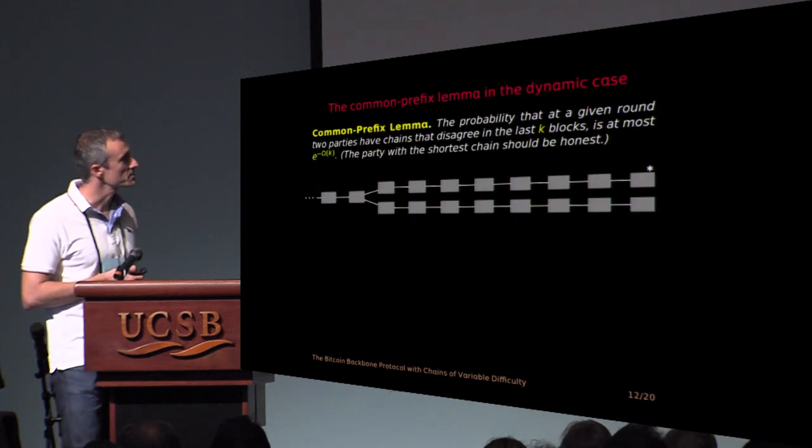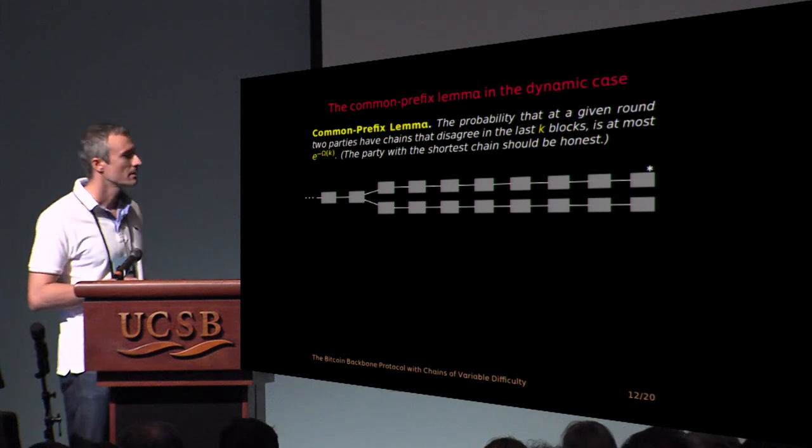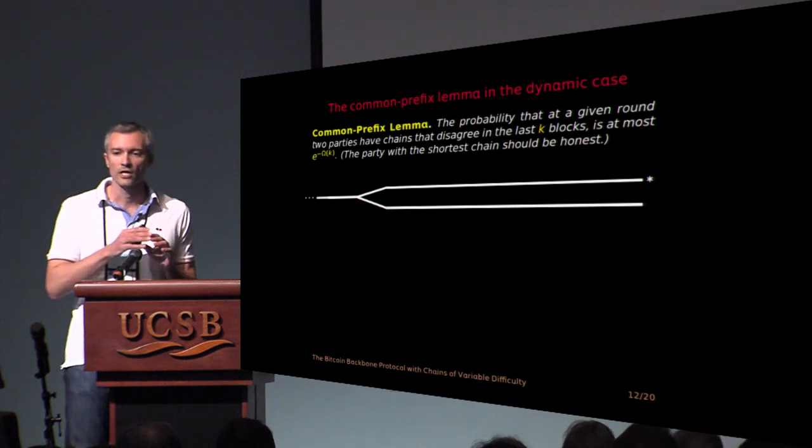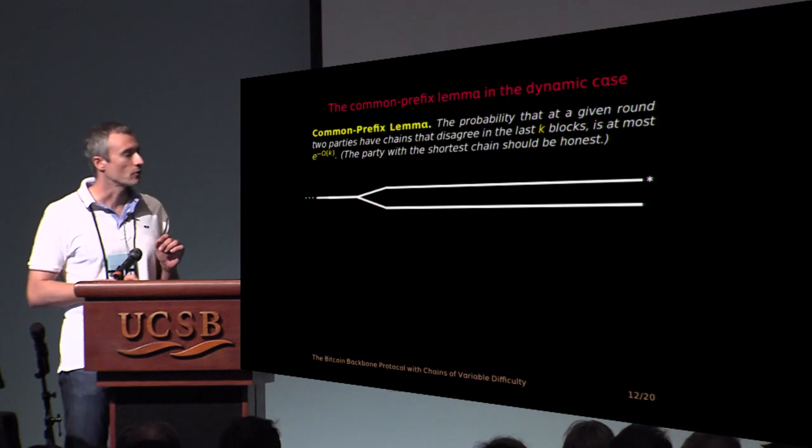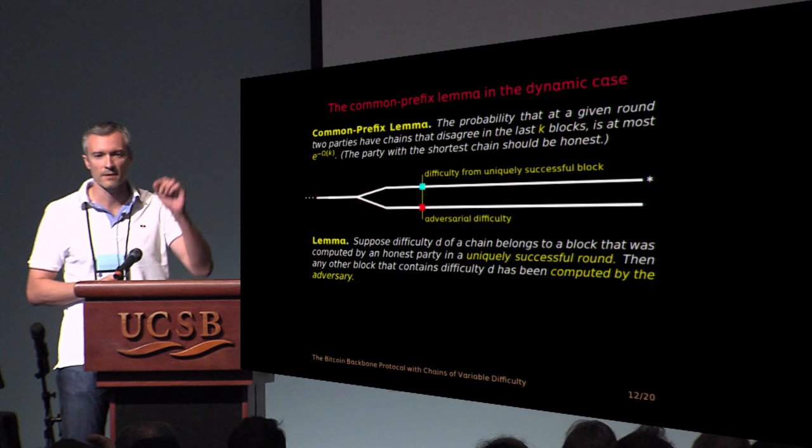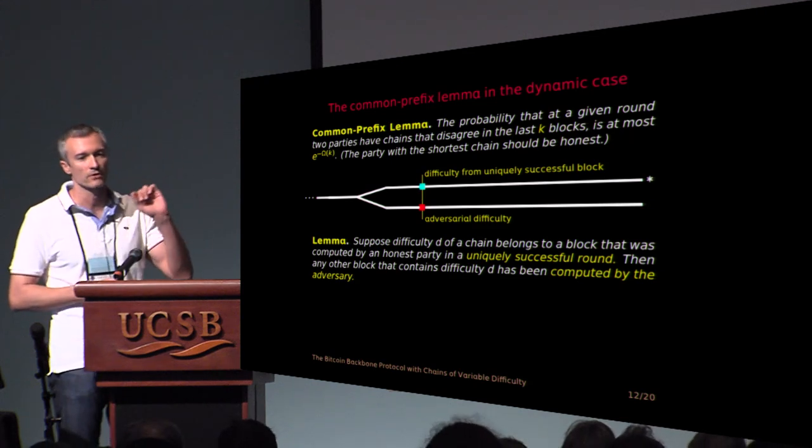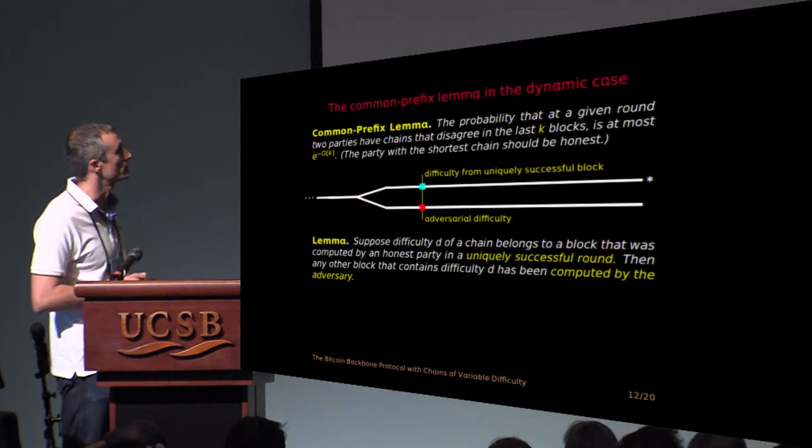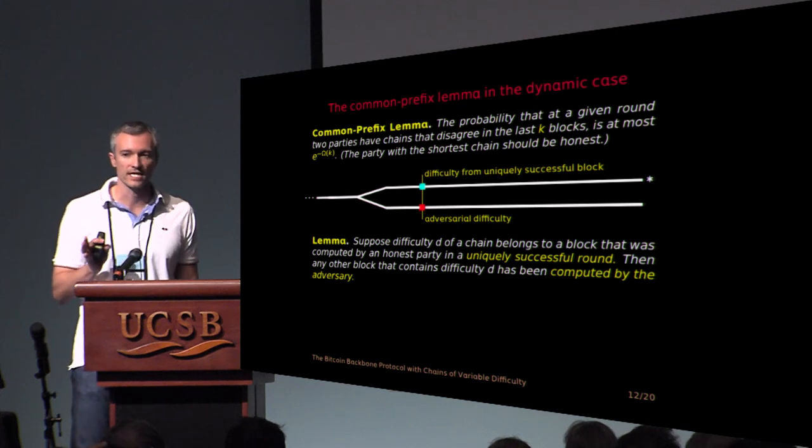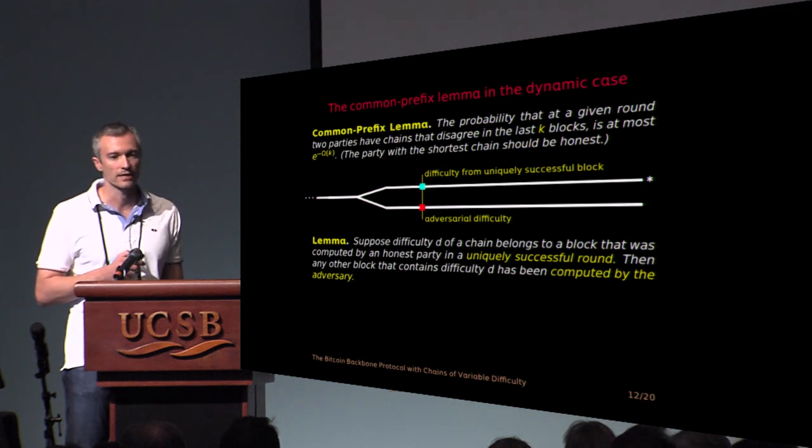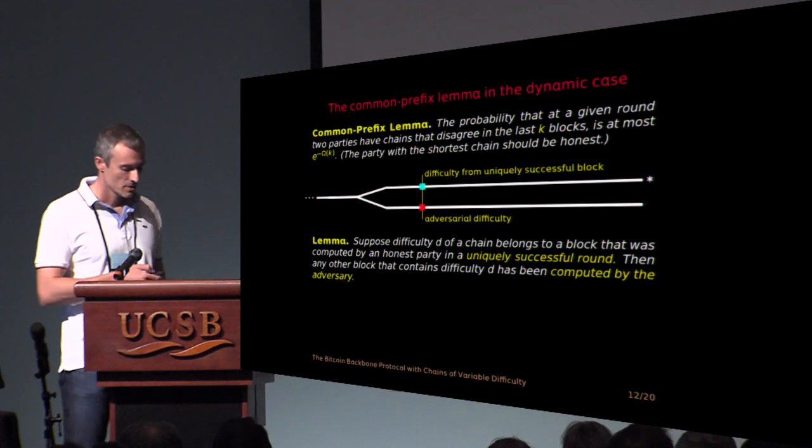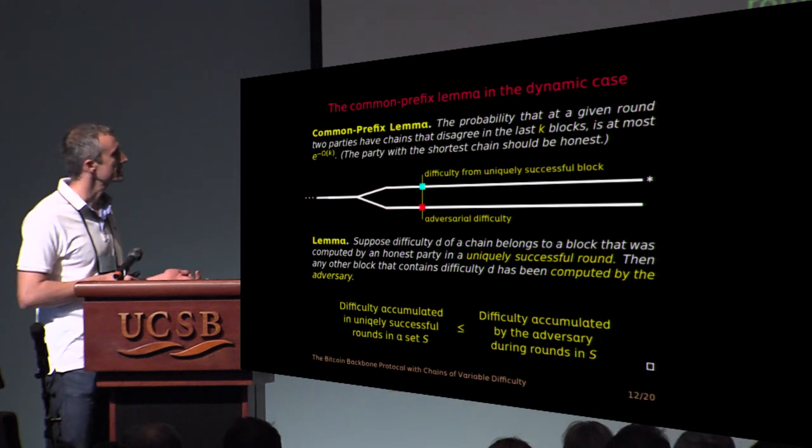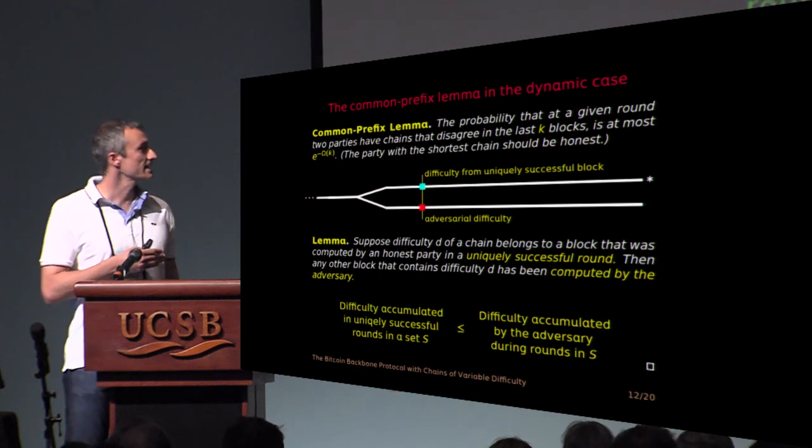And so let's see the common prefix, how much of the common prefix proof carry over to this setting. Again, let's see a long fork. But this time, let's think of the chain as a continuous accumulation of difficulty. And let's see that the same observation holds. So imagine some difficulty at some 0.8.3 on a chain. Let's say the difficulty on 0.8.3 on a chain was computed at a uniquely successful round. It belongs to a block that was computed at a uniquely successful round. Then difficulty 8.3 at any other chain has to be provided by the adversary. It has to be logged in a block that was computed by the adversary. So as before, this allows you to show that a large fork implies an inequality between the difficulty accumulated in uniquely successful rounds by the honest parties and difficulty accumulated by the adversary.